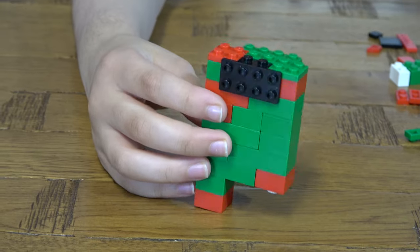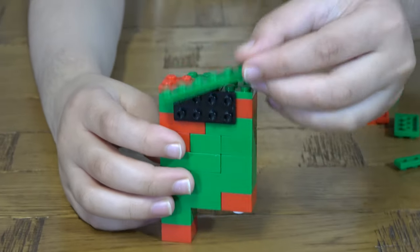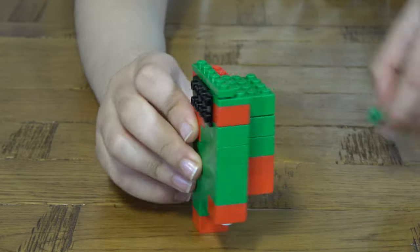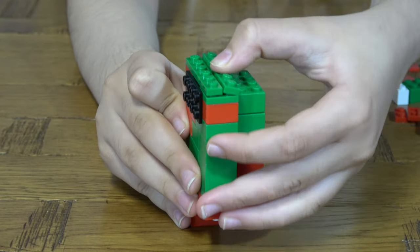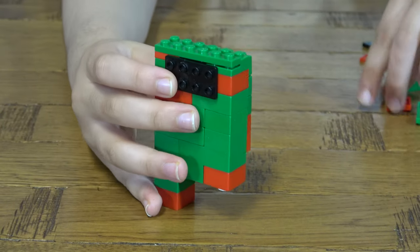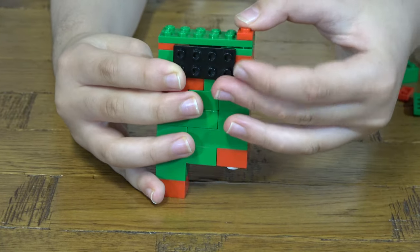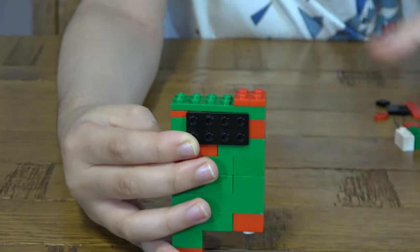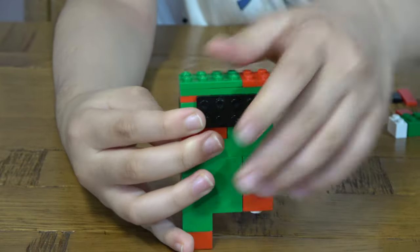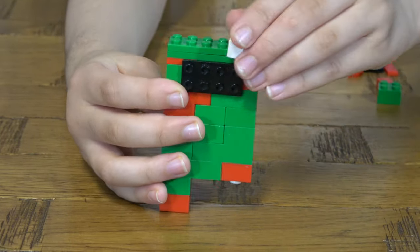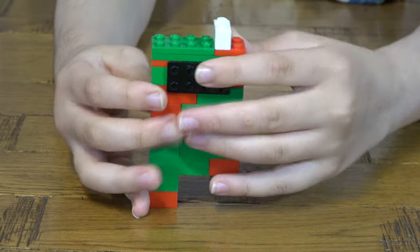And the next thing you need to do is get two of these, place them on like so. And then next, place two of these like this. Then next you place this here.